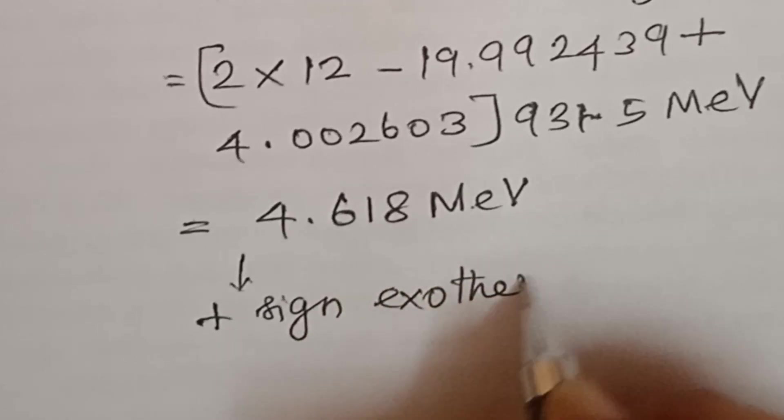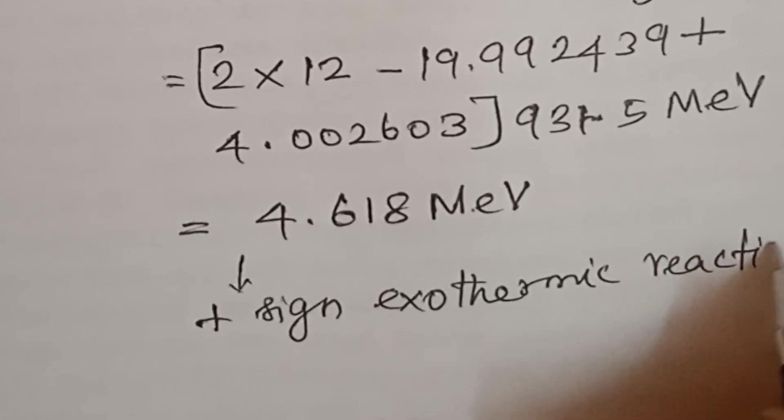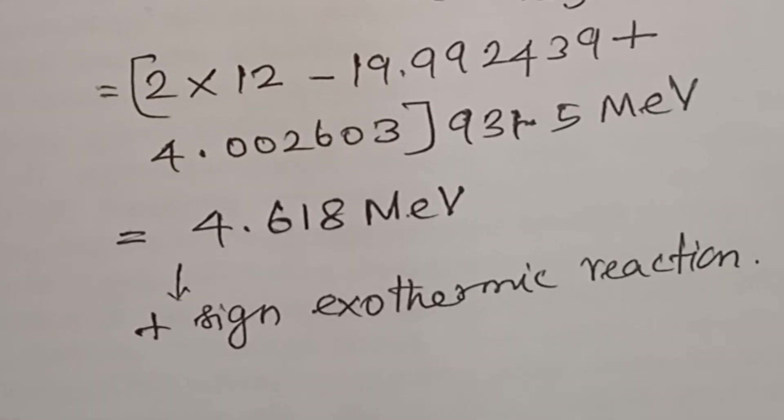Q equals delta M c squared - we use this formula. Delta M equals left side minus right side. This equation is very simple.